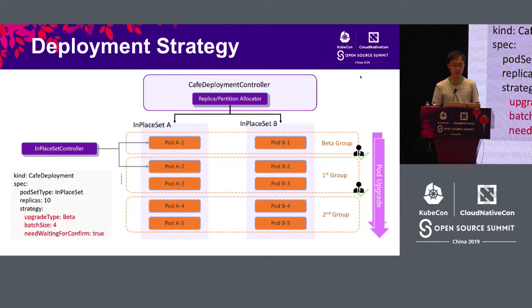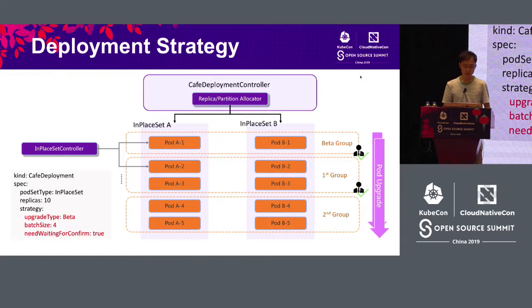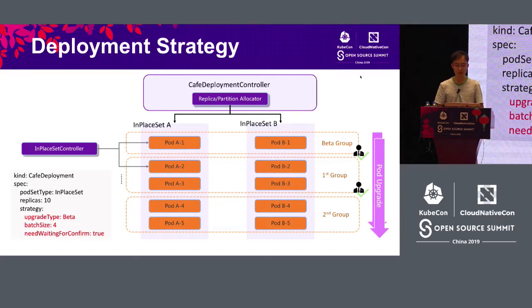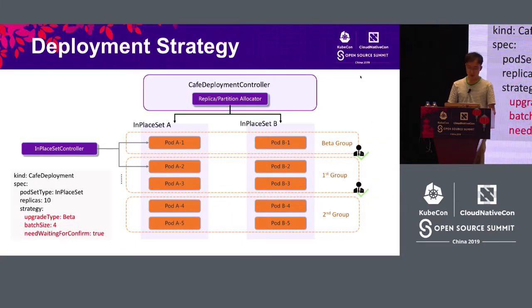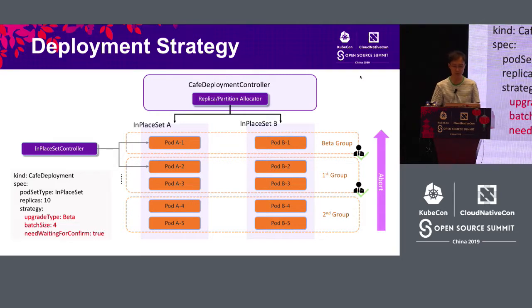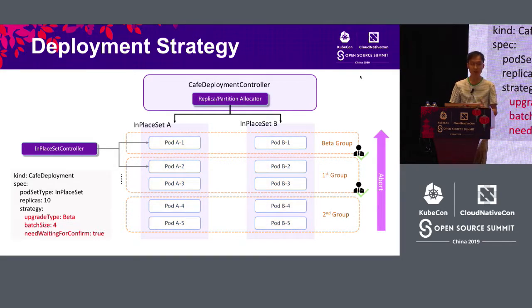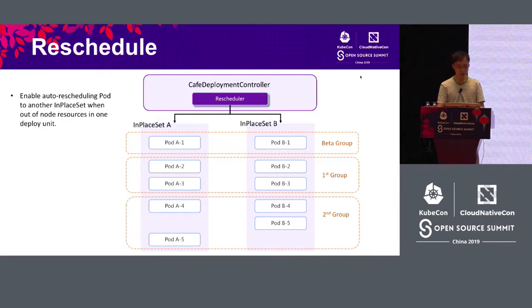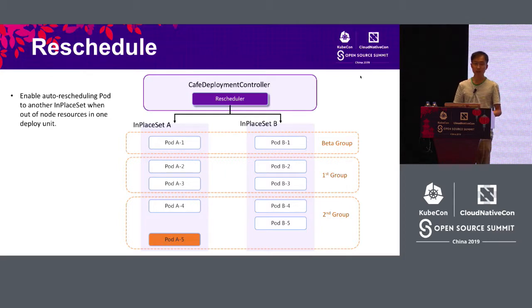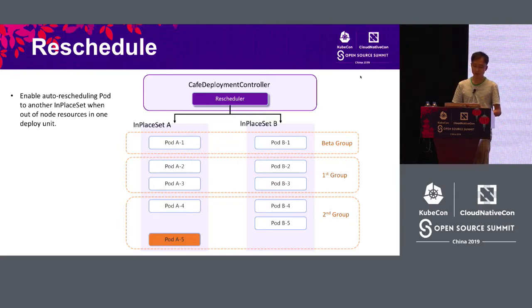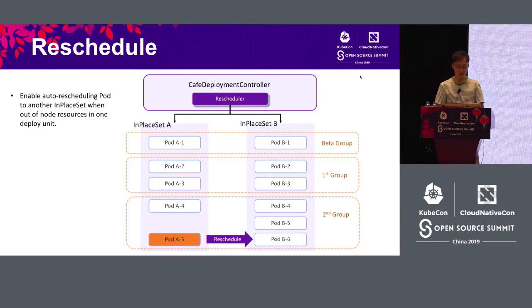During the deployment process, the Cafe Deployment controller does not directly apply changes to pods. Pod creation and upgrade is done by the in-place set controller. The Cafe Deployment controller only abstracts the strategy. If the pod version has a problem during deployment, the customer can abort and undo the upgrade. If in-place set A does not have enough resources and one pod cannot be created, a rescheduling mechanism will automatically reschedule the pod to another in-place set.